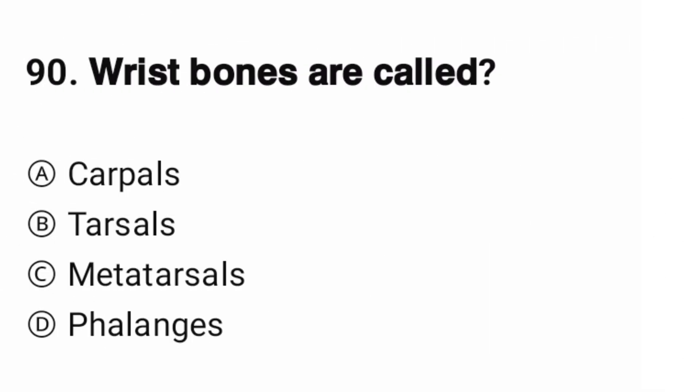Question number 90. Wrist bones are called? The correct option is A, carpal.